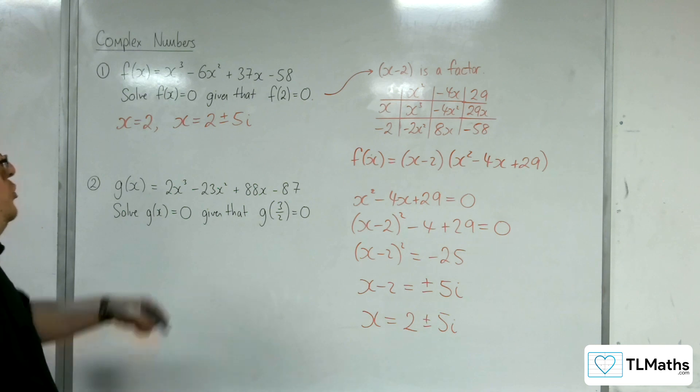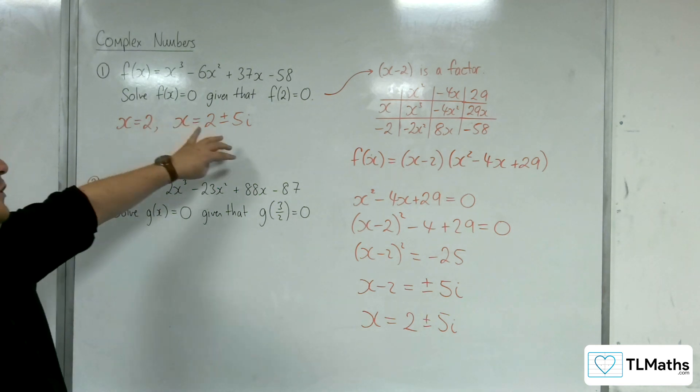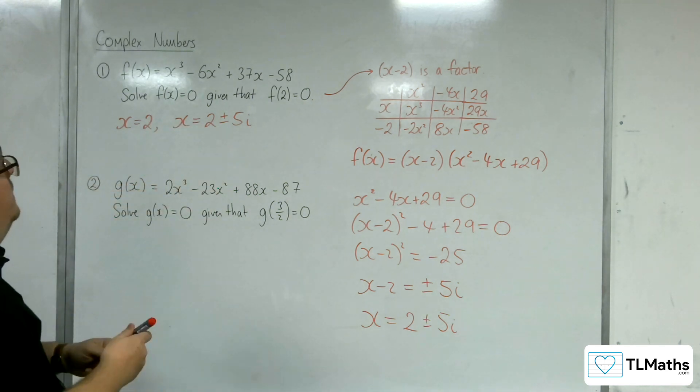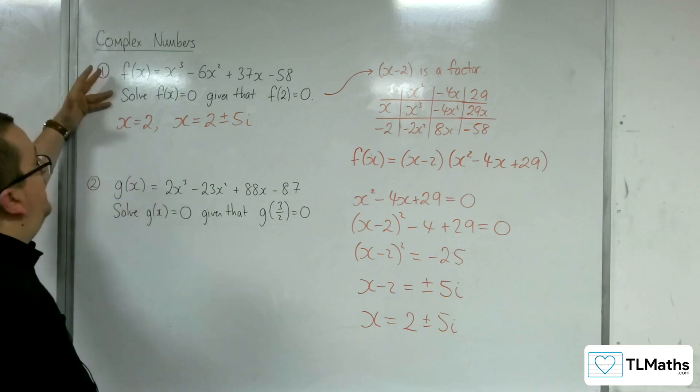And so, there are three solutions. One is real, two are complex. And they are the solutions to f(x) = 0.